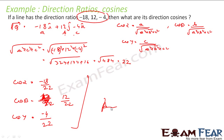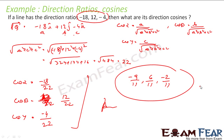Very simple. We can simplify: −18/22 becomes −9/11, 12/22 becomes 6/11, and −4/22 becomes −2/11. So these are my direction cosines, where the direction ratios were given.